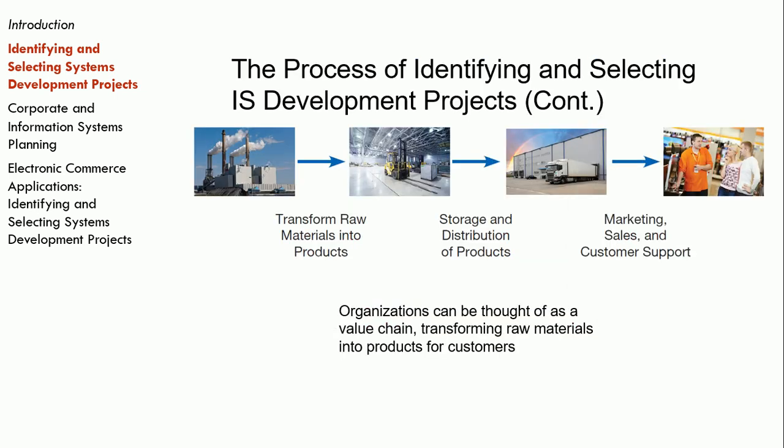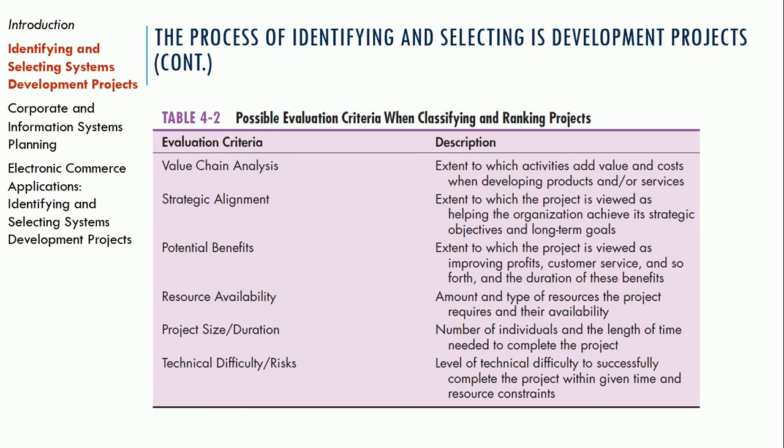Looking at this example of a value chain — which you'd learn about in a management information systems course — we start with transforming raw materials into products, then we store and distribute those products, market and sell them, and eventually support them. So we look at that value chain to determine how a particular project will bring value, or what part of the value chain we're improving with this project.